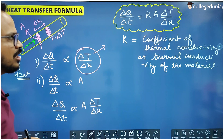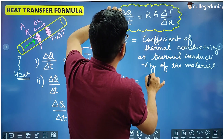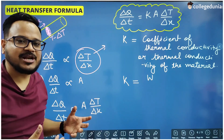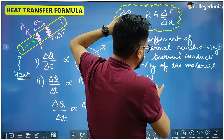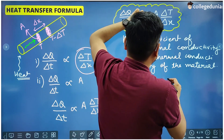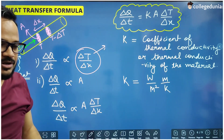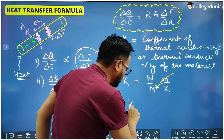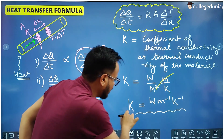What is the SI unit of K? Since delta Q by delta t is energy per unit time, which is power, the SI unit of power is watt. Area A comes in the denominator with SI unit meter squared, delta x comes in the numerator with SI unit meter, and temperature comes in the denominator with SI unit Kelvin. Cancelling one meter, the SI unit of K is watt per meter per Kelvin.